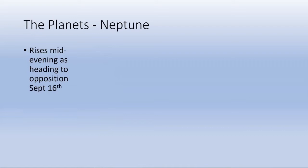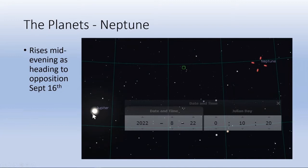Neptune rises in the mid-evening and is heading towards its opposition September 16th. You can see here that it's fairly close to Jupiter. You can see here it was just after midnight, and it's just a tiny dot. Get yourself a good little telescope to have a look at that one.